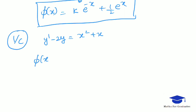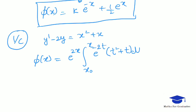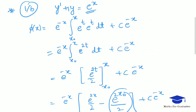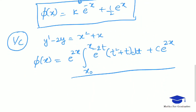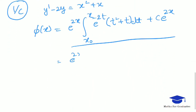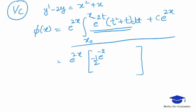Applying the formula, φ(x) = e^(2x) times the integral from x₀ to x of e^(−2t)(t² + t) dt, plus c·e^(2x). Integrating the integrand: the integral of e^(−2t)(t² + t) dt equals −(1/2)·e^(−2t)·(t + 1)², with limits from x₀ to x, plus c·e^(2x).